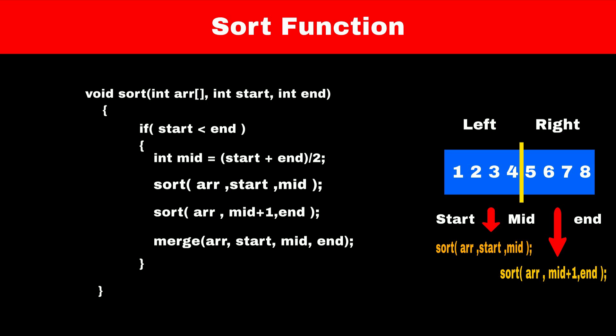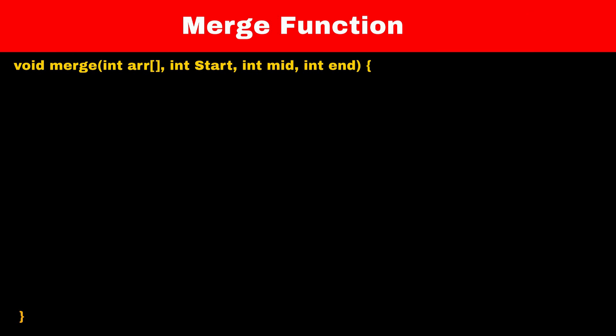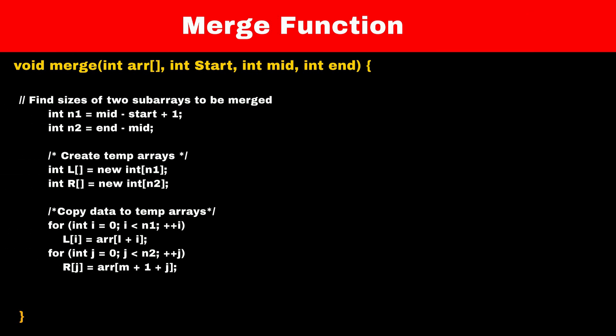This sort function will split array into subarrays and our merge function will merge these 2 subarrays into 1 big sorted array. Now let's define the merge function. In the first step we will copy data of 2 subarrays into 2 different arrays. Now we just have to merge these 2 sorted arrays.